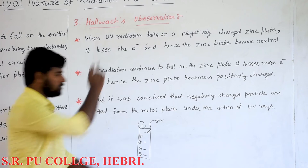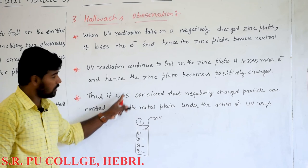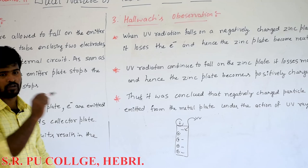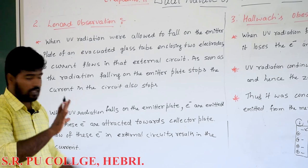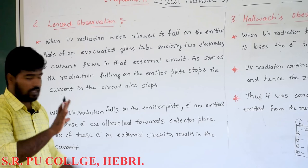Thus it was concluded that negatively charged particles are emitted from the metal plate under the action of UV rays. Lenard's observation as well as Hallweck's observation together concluded that negatively charged particles are emitted from the metal plate under the action of UV rays.